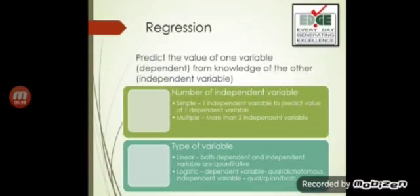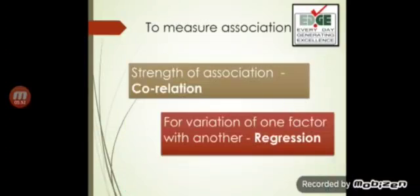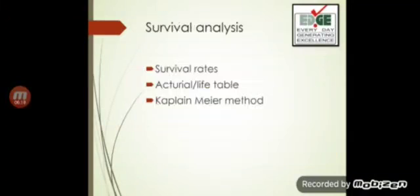An independent variable could be qualitative, quantitative, or both. The takeaway message: to measure the strength of association, correlation is used. The strength of association is measured by chi-square whenever this comes in reference to study designs. The strength of association is measured with the help of odds ratio. Don't get confused between these terminologies. For variation of one factor with the other, regression is used.